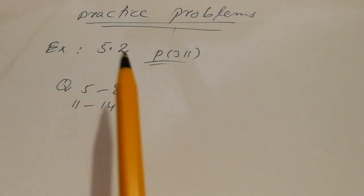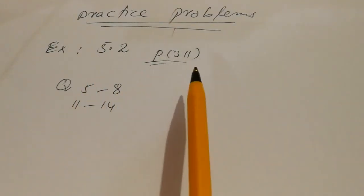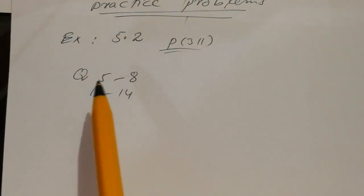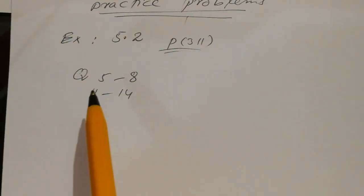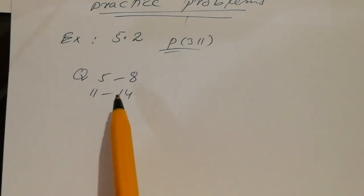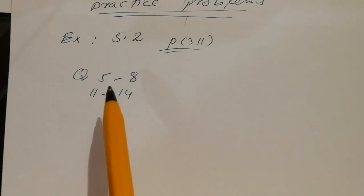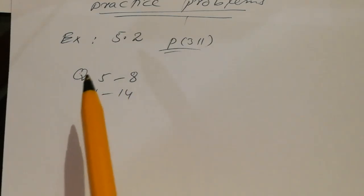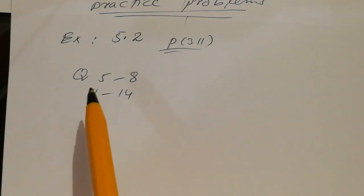You can practice these problems from Exercise 5.2, page 311, questions 5 to 8 and 11 to 14. In the next lecture, I will discuss orthonormal diagonalization, but first you need a strong grip on this topic and the previous topics — eigenvalues, eigenvectors, and basis for eigenspaces. Till the next lecture, Allah Hafiz.